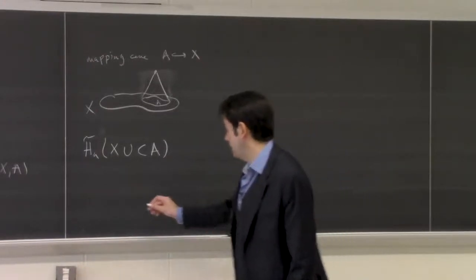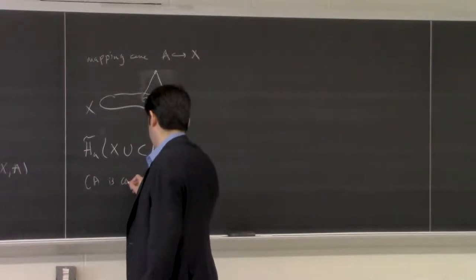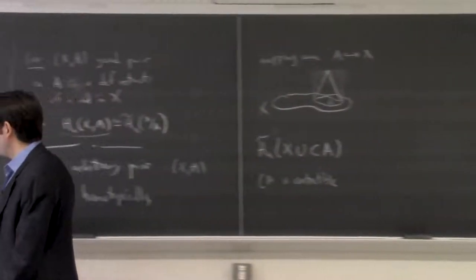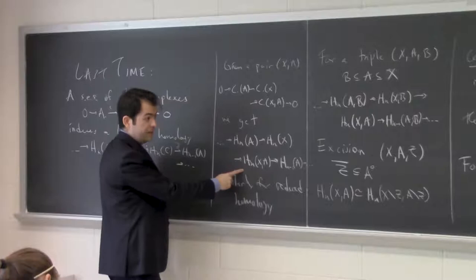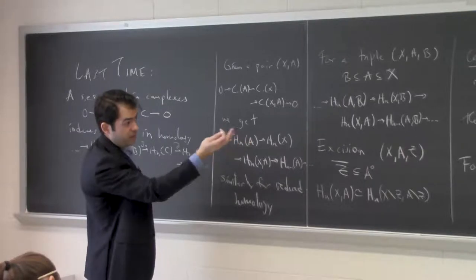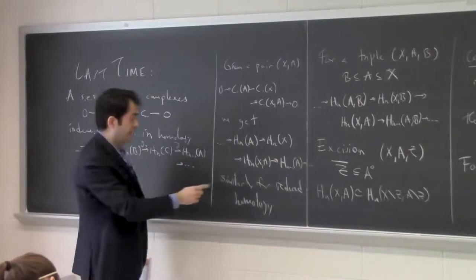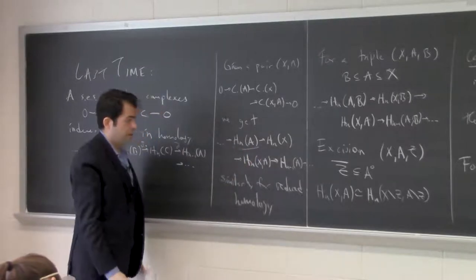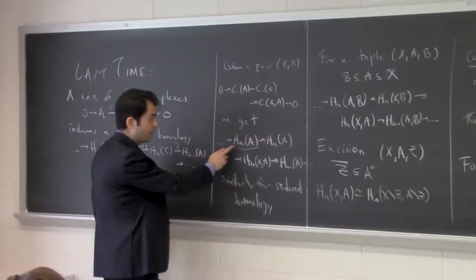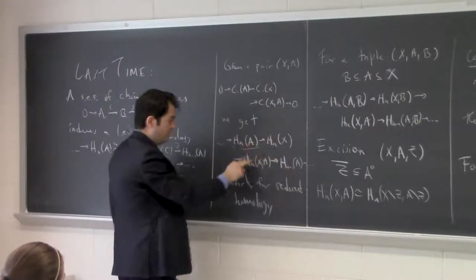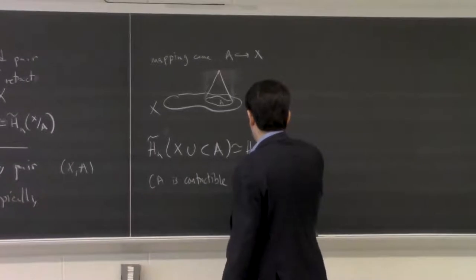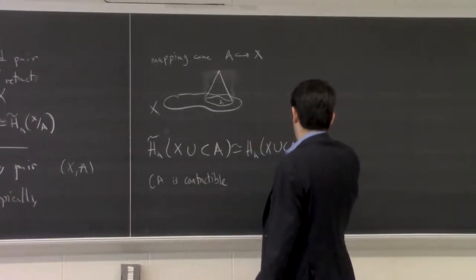The cone on A is contractible. So if we look at the long exact sequence for the pair — where the big space is X union the cone on A and the smaller space is the cone on A — then every term with H̃(cone A) gives zero because it's contractible. So if those terms are zero, then the map between the other two groups has to be an isomorphism. So the reduced homology of X union the cone on A is the same as the relative homology of (X union cone A, cone A).